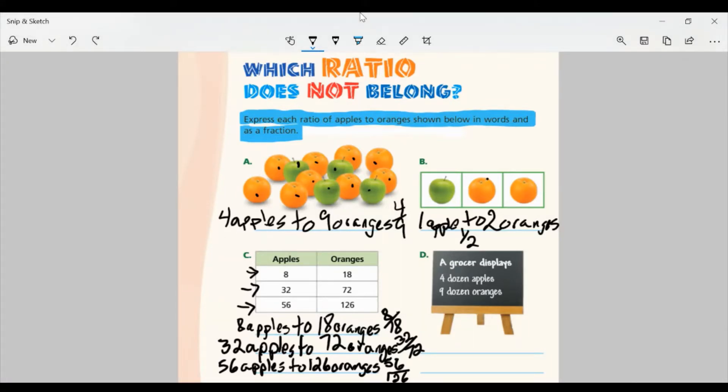Let's look at part D. A grocer displays four dozen apples and nine dozen oranges. Well, four dozen apples is four times 12, which is 48 apples. Nine dozen oranges would be nine times 12, which is 108. So you can write it as two different things. You can put four dozen apples to nine dozen oranges, or you can put 48 apples to 108 oranges. And as a fraction, that's going to be 48 over 108, or you could say four over nine, and they're represented in dozens.